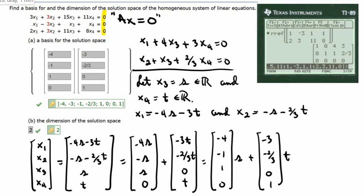We count the number of vectors in this basis: two. The basis would be negative 4, negative 1, 1, 0, and negative 3, negative two-thirds, 0, 1. Alternatively, if you let T equal 3, this would be negative 9, negative 2, 0, 3. That's equivalent and would work as well.